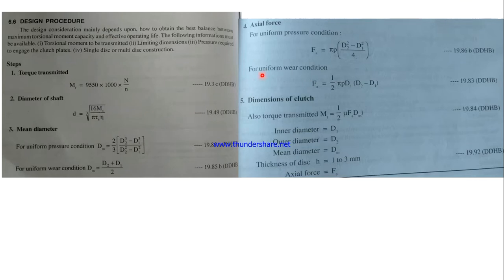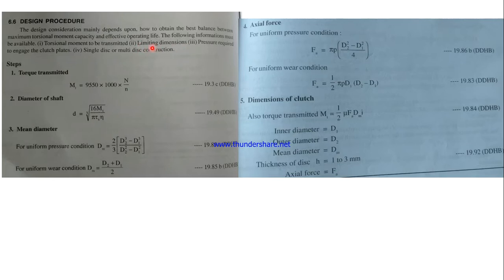We will also cover some numericals based on design of clutches. The design consideration mainly depends on how to obtain the best balance between the maximum torsional moment (torque) and the effective operating life. To design a friction plate clutch, you must have: torque to be transmitted, limiting dimensions (inner diameter, outer diameter, thickness), the pressure to engage the clutch plates, and whether it is single disc or multi-disc construction.